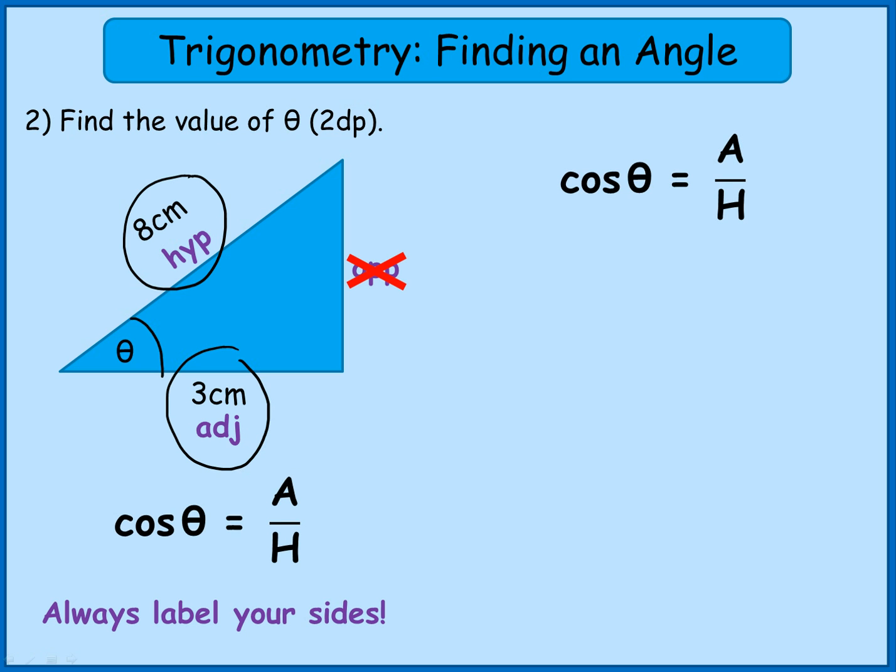So I write that down. I then pop in the information I know, so I know that the hypotenuse is 8 and the adjacent is 3. So where I've got A I write 3, where I've got H I write 8. So cos theta is 3 over 8. So we now know the link between the angle and adjacent and hypotenuse. All we need to do now is work out what is that angle.